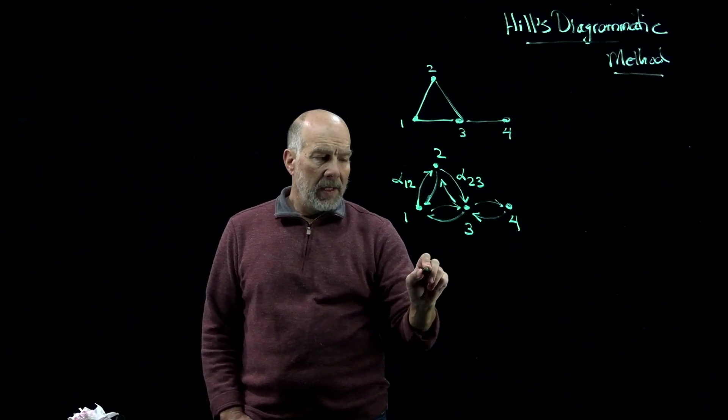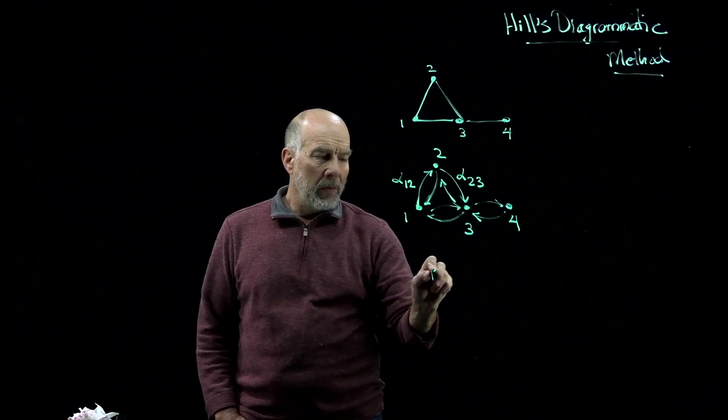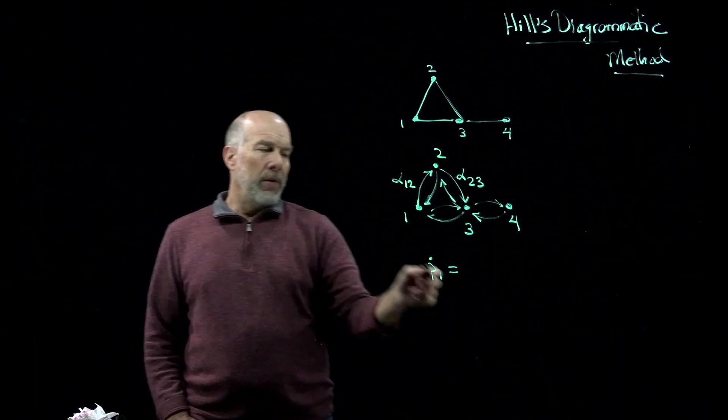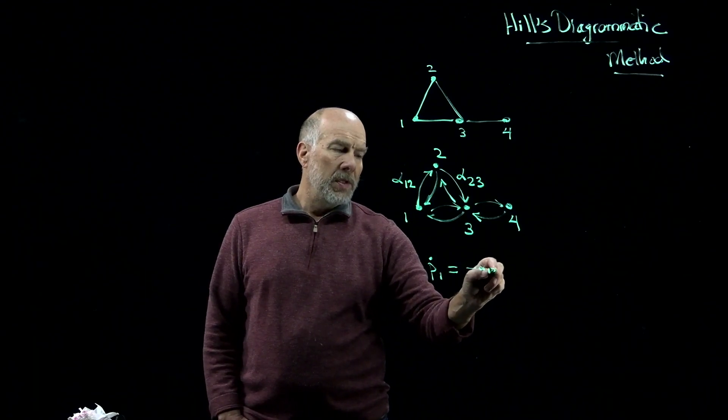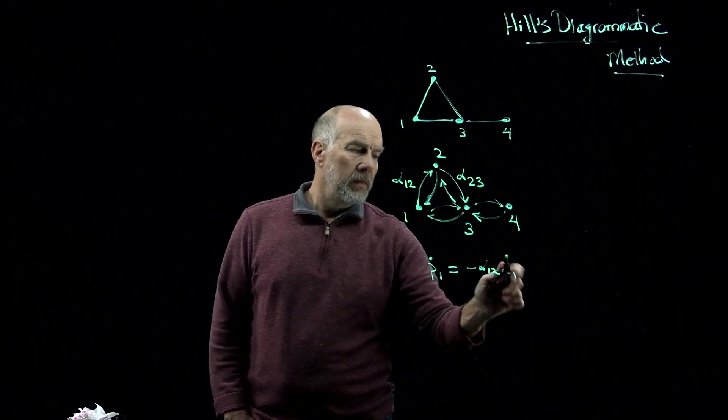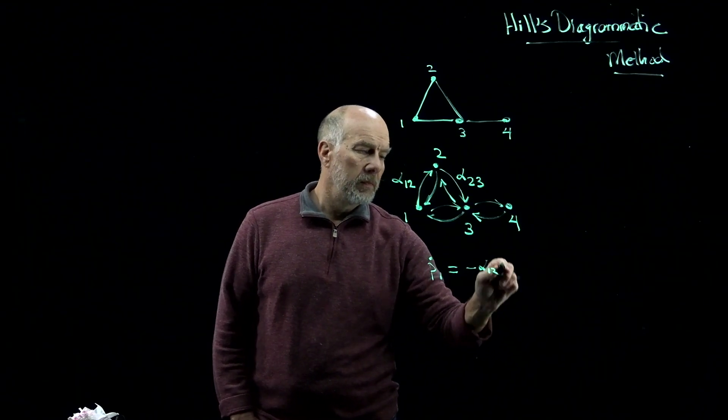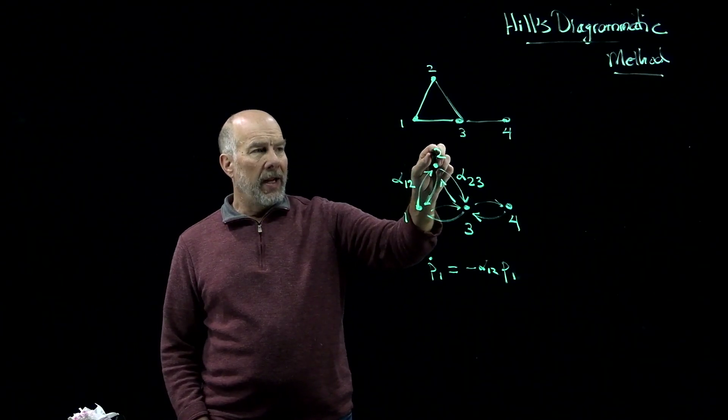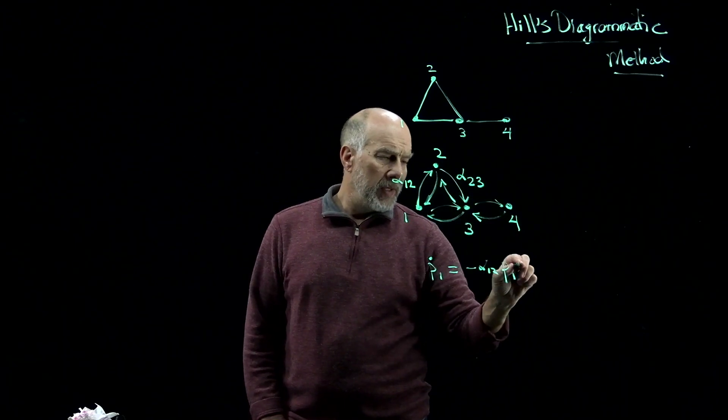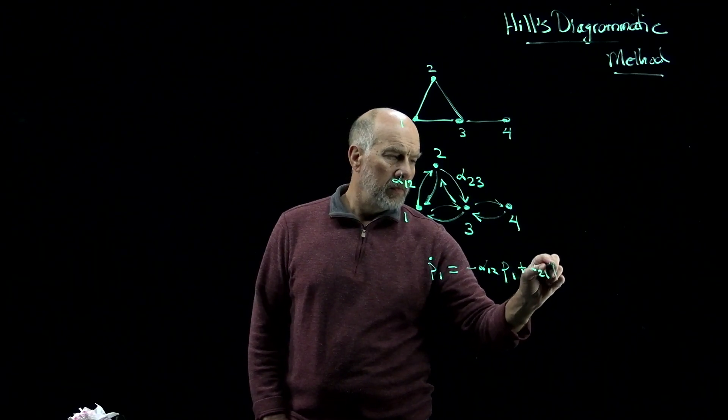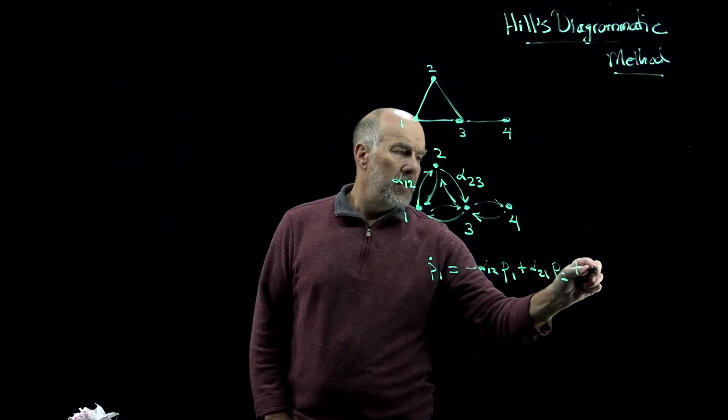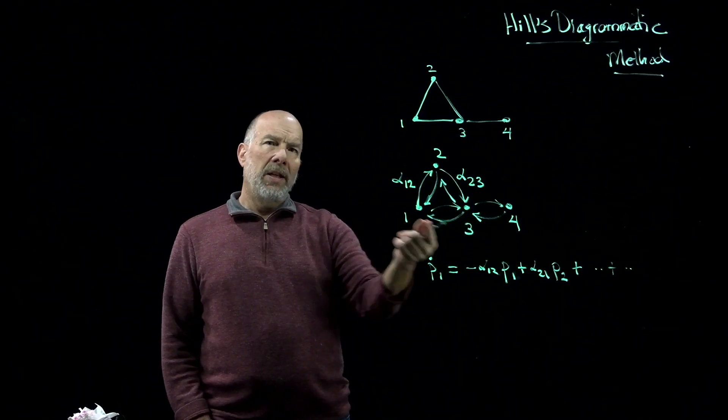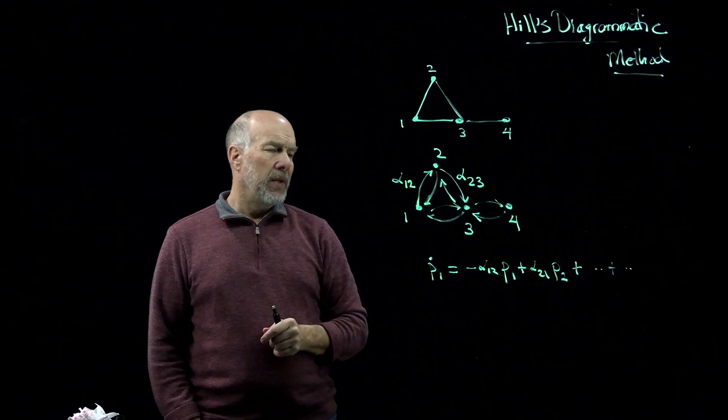And then there's dynamics of probability, where we'll have the rate of change of the probability of being in state 1 equals, well, there's a loss at the rate alpha 1,2 times p1, and there's a gain of probability at the rate alpha 2,1 times p2, and so on. There'll be two terms that come from the fluxes in from state 3 and out from state 1 to state 3, and so on.